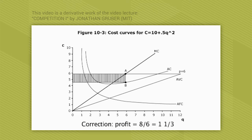But I make those profits on all 6 units I sell. So what that means is in total, I'm going to make profit of 8. The area of this rectangle is 8.